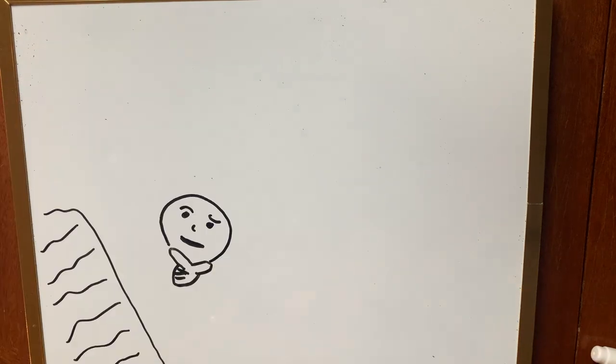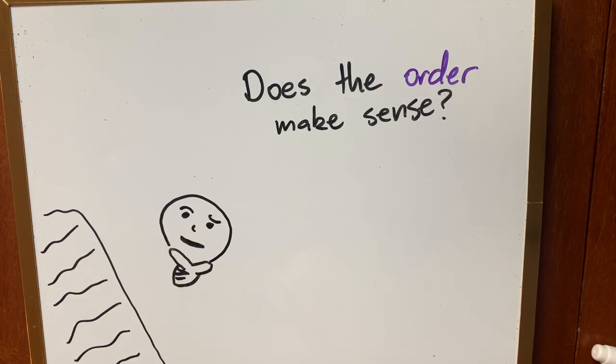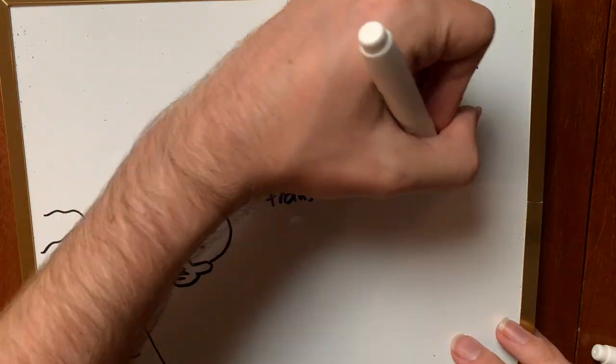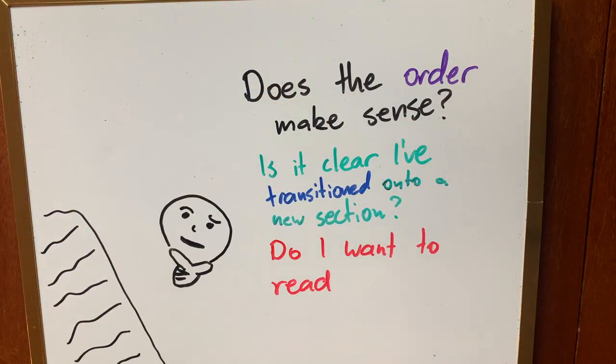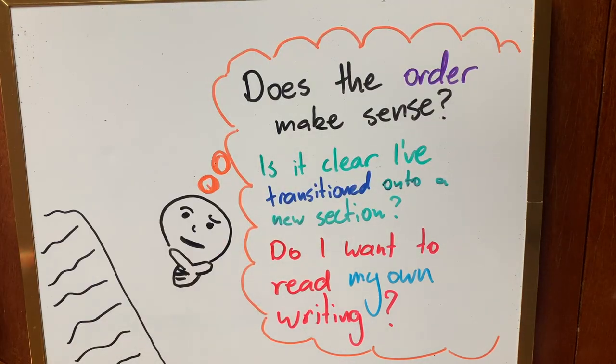When reading over your work, ask yourself: has the order I've written things in made sense? Is it clear that I've transitioned onto a new section? Do I want to read my own writing? And if not, what can I do to make my writing more interesting?